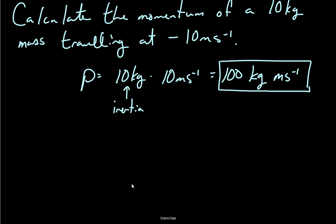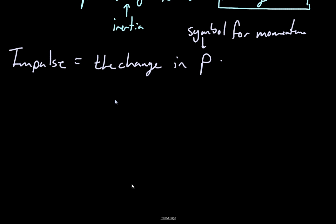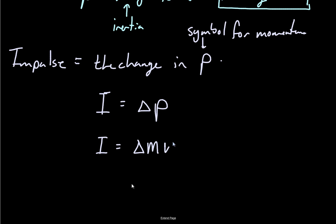Before we do that, I want to talk about impulse. Impulse is change in momentum — you may have studied it a bit in grade 10. So the change in P — by the way, P is the symbol for momentum; I don't know why it's P, it just is. Mathematically, impulse equals the change in momentum, which we can write as delta of (m times v).